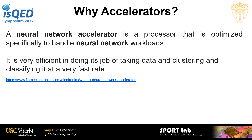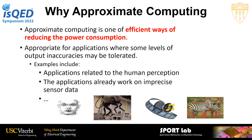Why are accelerators important? A neural network accelerator is a processor optimized specifically to handle neural network workloads. It is very efficient at taking data and clustering and classifying it at a very fast rate. Approximate computing is important because it is one of the efficient ways of reducing power consumption, and it is appropriate for applications where some level of output inaccuracy may be tolerated, such as applications related to human perception or those working on imprecise sensor data.